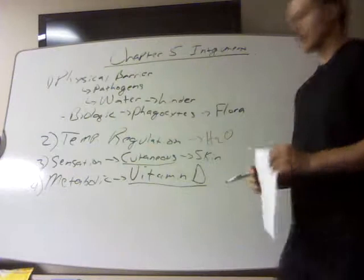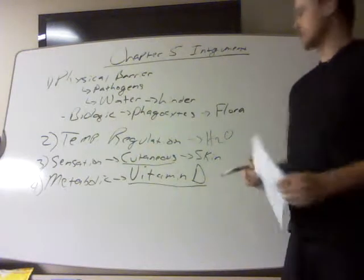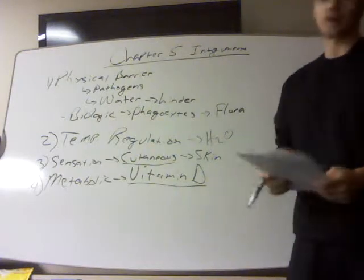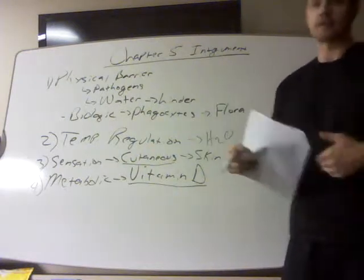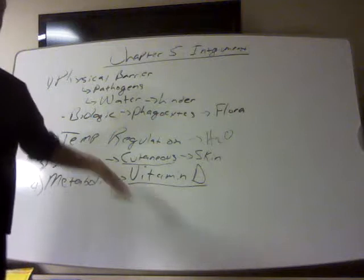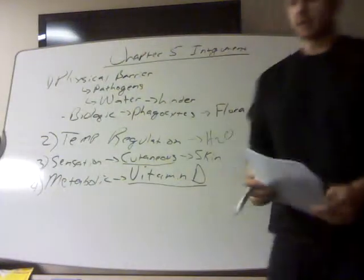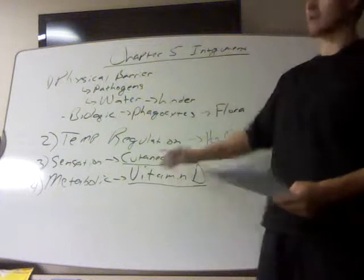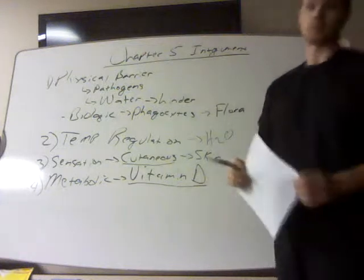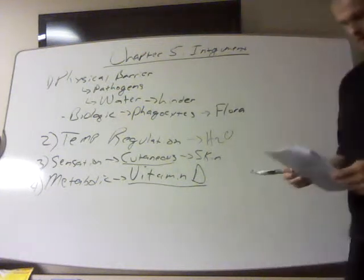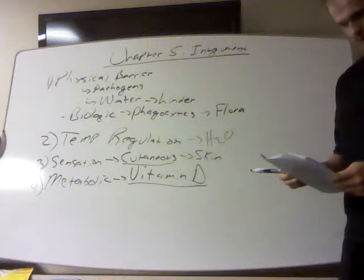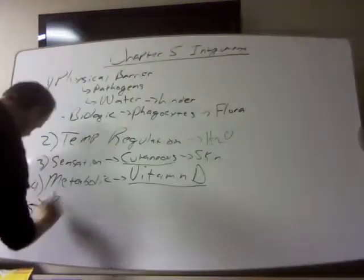The liver and kidneys finish producing the hormone called calcitriol. Vitamin D helps us retain calcium in the body — it makes it easier for our GI tract to absorb calcium and stimulates the kidneys to retain calcium. Therefore, people low on vitamin D have a hard time absorbing calcium and develop bone problems. In kids, you'll see this as rickets, which we'll discuss later.